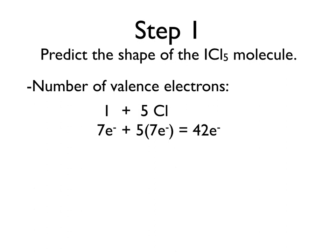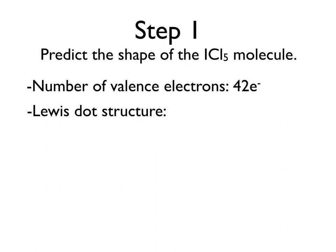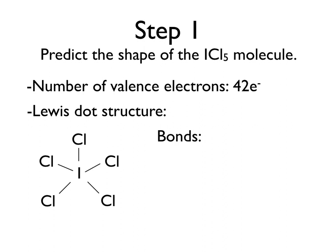Now we're ready to begin to put together our Lewis dot structure. As always, we start by putting our first molecule in the center — that's our iodine — and then we're going to surround that by the remaining five chlorine atoms. We have 42 electrons to dole out, so we're going to begin by adding some bonds. There's going to be one bond attached between the iodine and each of the chlorines, and each of those bonds gives us two electrons. Since there are five bonds, that's ten electrons.